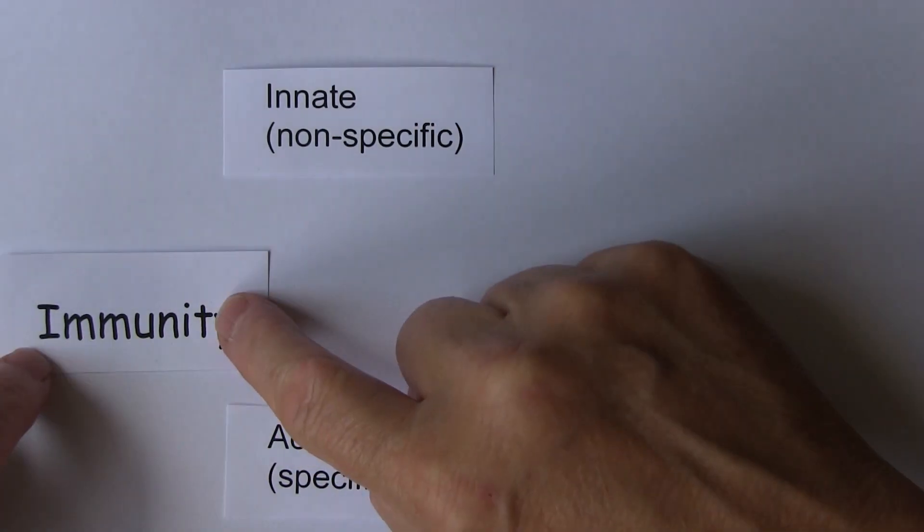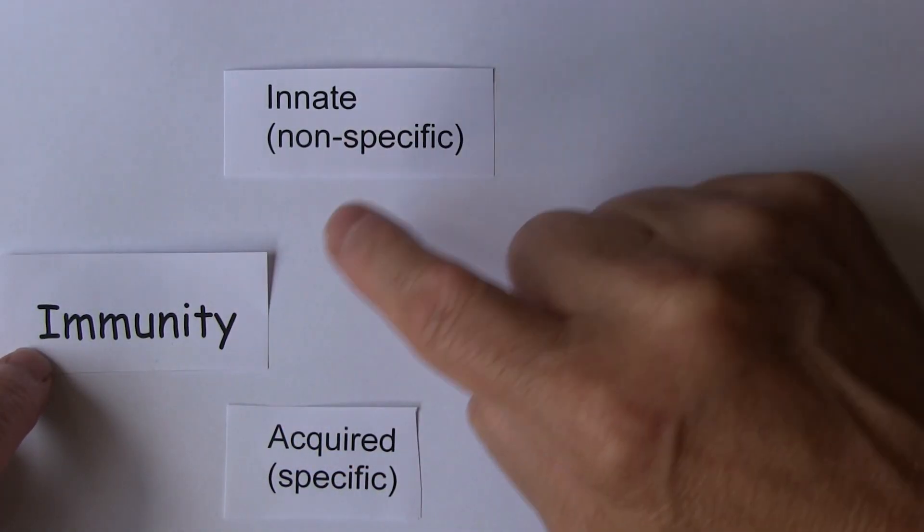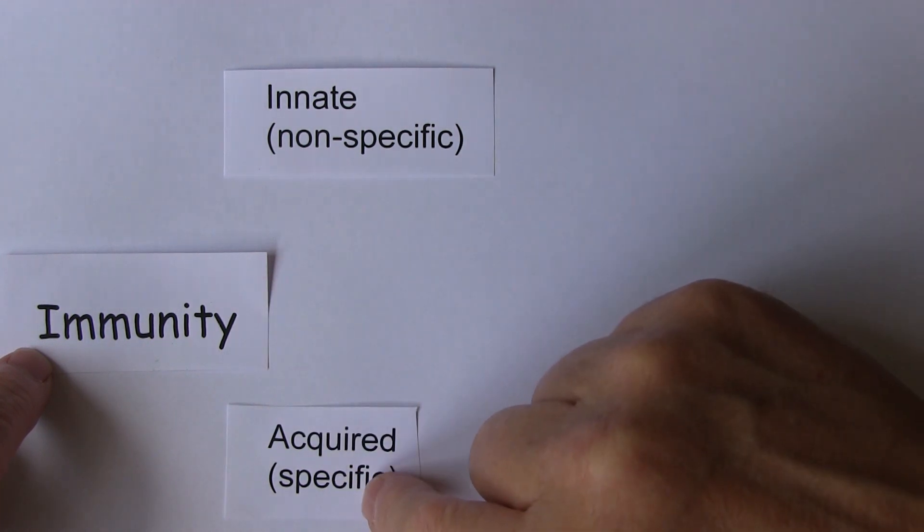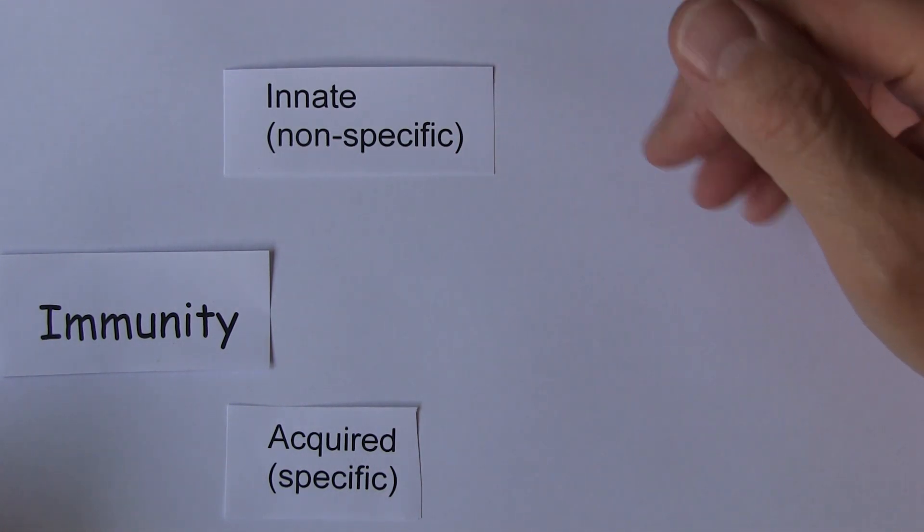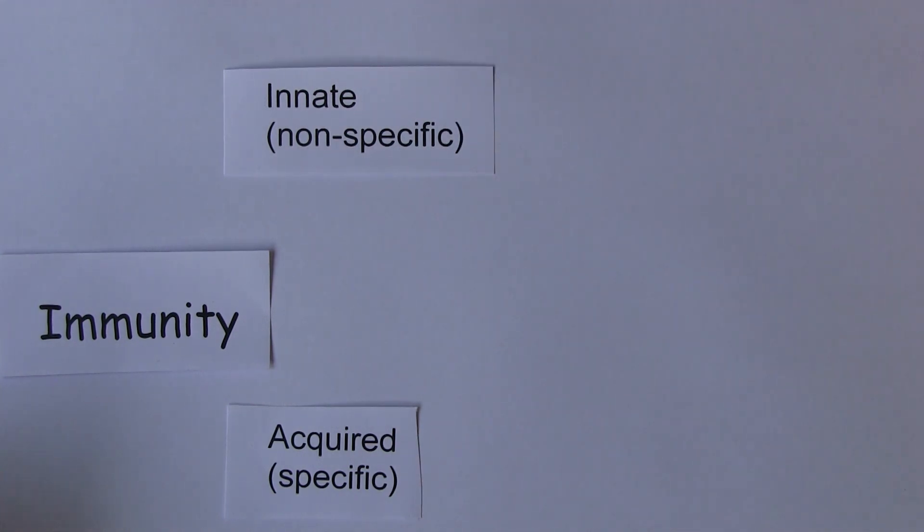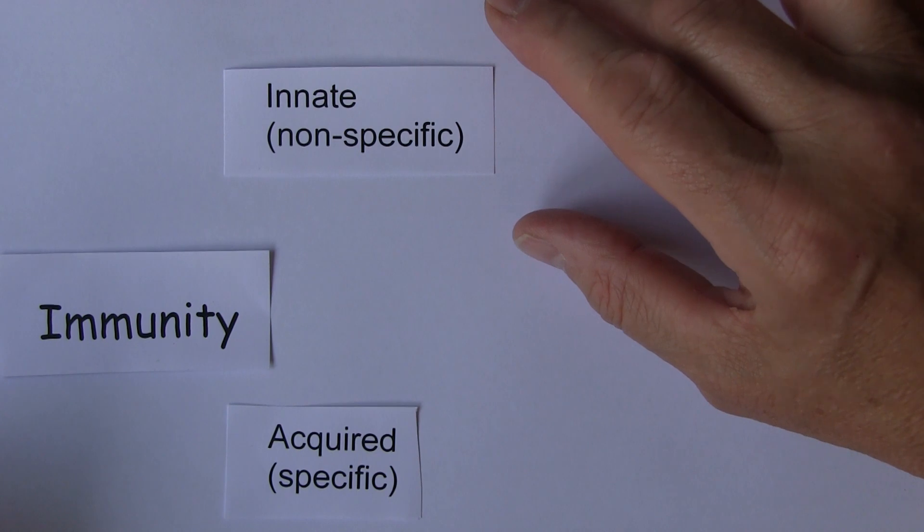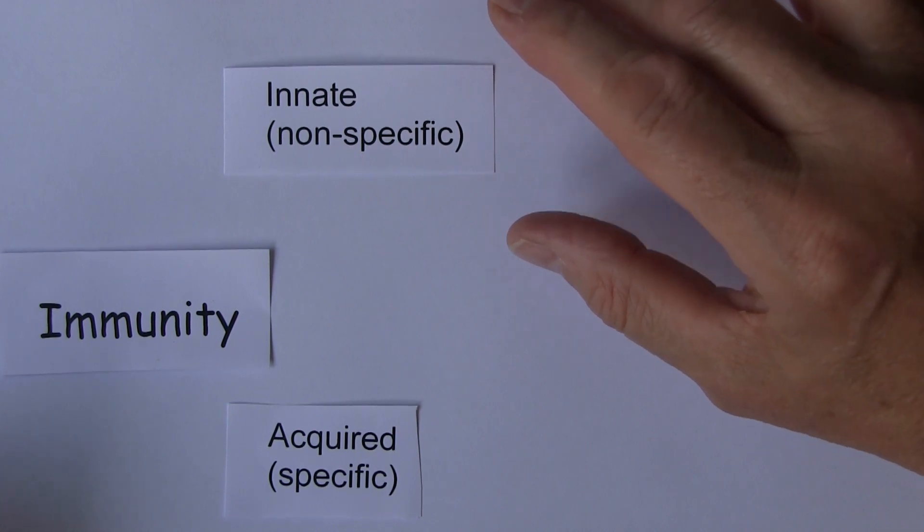So immunity can be innate, which is non-specific, or acquired, which is specific. Now innate immunity relates to the normal anatomy and physiology of the body. So intact skin, intact mucous membranes, the cilia wafting up mucus, the urine flowing through the urinary tract. All these things are innate, they work against a wide variety of organisms.